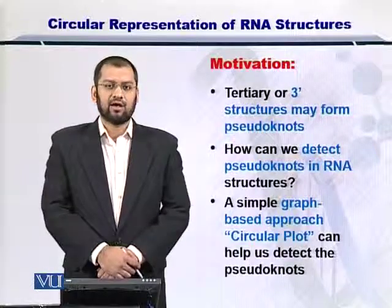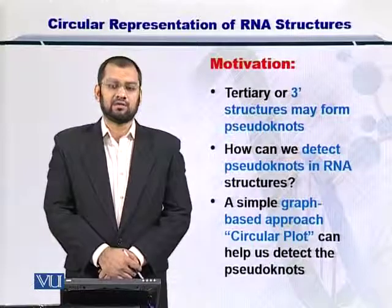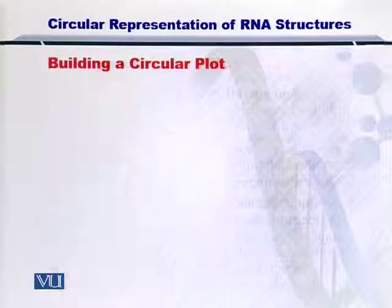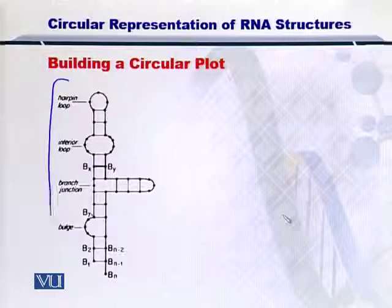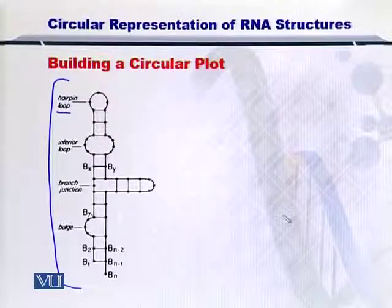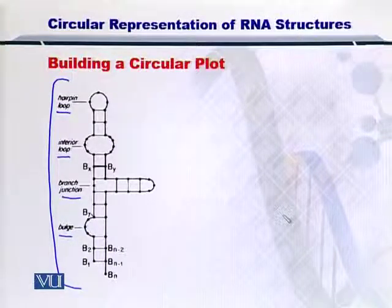Let us see how we can construct a circular plot by looking at an RNA tertiary structure. Given an RNA secondary structure like that, which comprises of the hairpin loops, interior loops, the junctions or the intersections and bulges, how can we find out that pseudoknots exist within this structure.